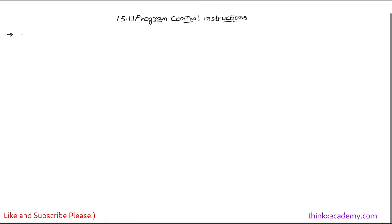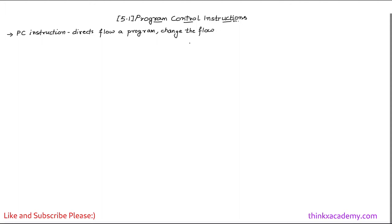So first of all, let me give you a formal definition or a very clear explanation of what exactly is a program control instruction. A program control instruction — I'm just going to write it as PC instruction — essentially what it does is it directs the flow of a program. They will direct the flow of a program, and this flow will also be able to change.